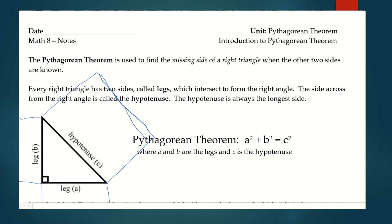So in our picture, the area for square A and the area for square B added together would be the same as the area for square C. This was pretty interesting at the time — we're talking over 2000 years ago when this discovery was made.